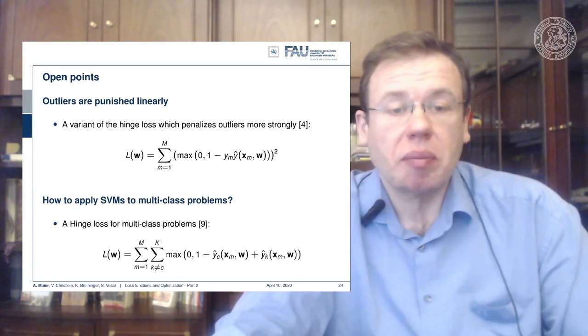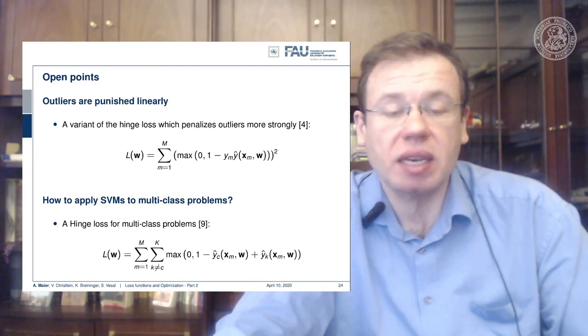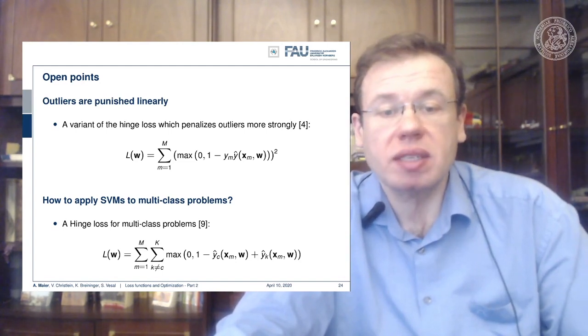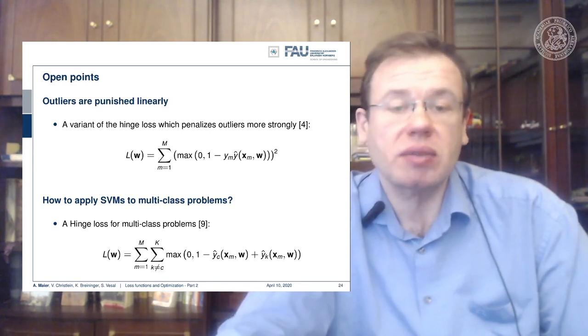So we can also apply this hinge loss to multi-class problems. And what we are introducing here is simply an additional sum where we then do one versus many. So we are not just classifying towards one class, but we are classifying one versus the rest. And then this introduces the two classifiers shown here in the very end. And then we can also construct a multi-class hinge loss.